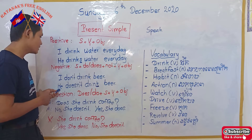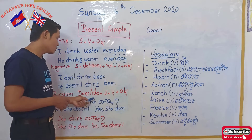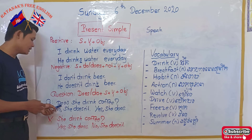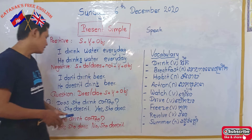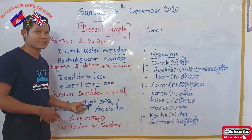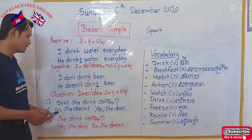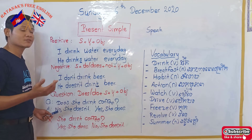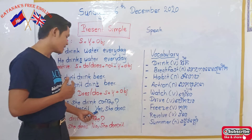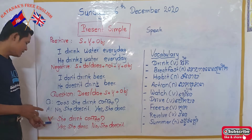Now the question form: do or does, plus subject, plus verb one, plus object. For example, a question and answer: 'Does she drink coffee?' Here 'drink' also has no 's' because it follows an auxiliary verb. If she doesn't drink coffee, we say 'No, she doesn't.' If she does drink coffee, we say 'Yes, she does.' That is the correct way to answer this question.